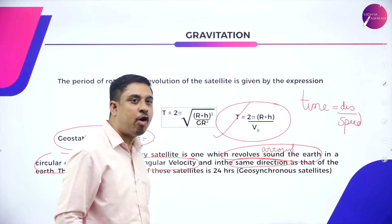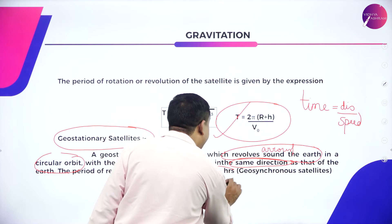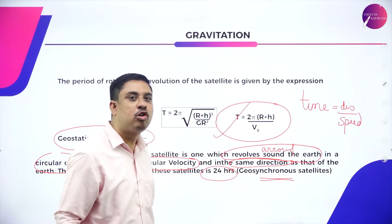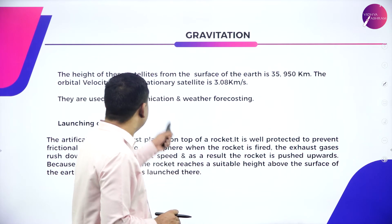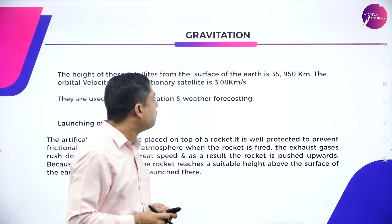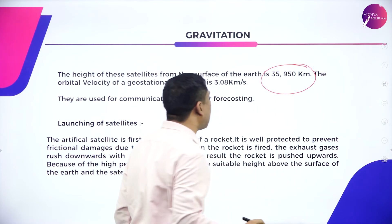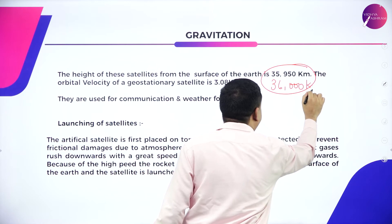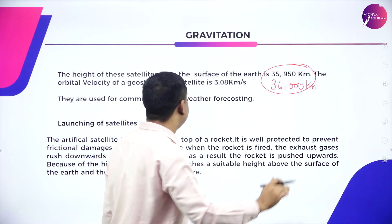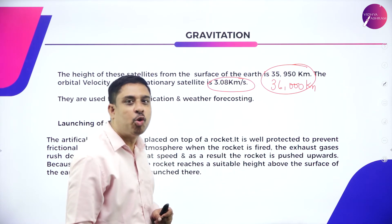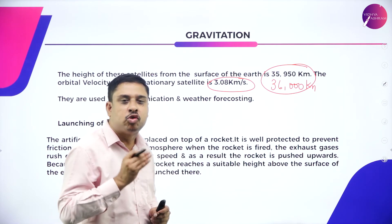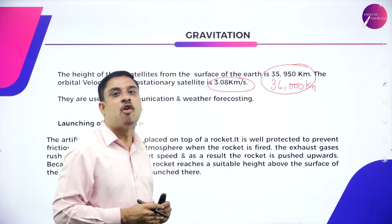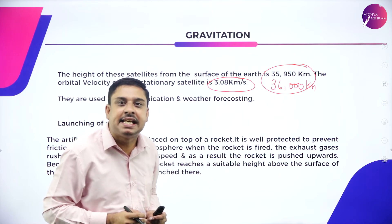The period of revolution of a geostationary satellite is 24 hours — the same as that of the earth. Therefore, it is also called a geosynchronous satellite. The height of these satellites from the surface of the earth is 35,950 kilometers, or nearly 36,000 kilometers, and its orbital velocity is 3.08 kilometers per second.